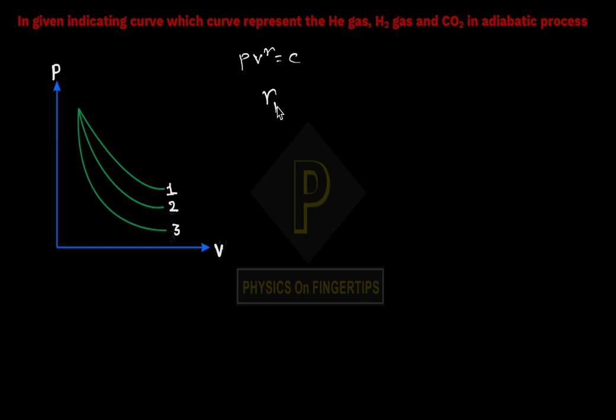Gamma for He is 5 by 3. Gamma for H₂ is 7 by 5. And gamma for CO₂ is 1.28.